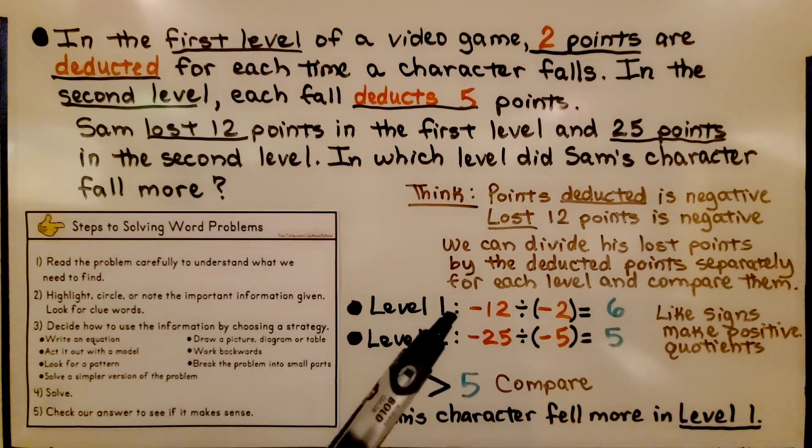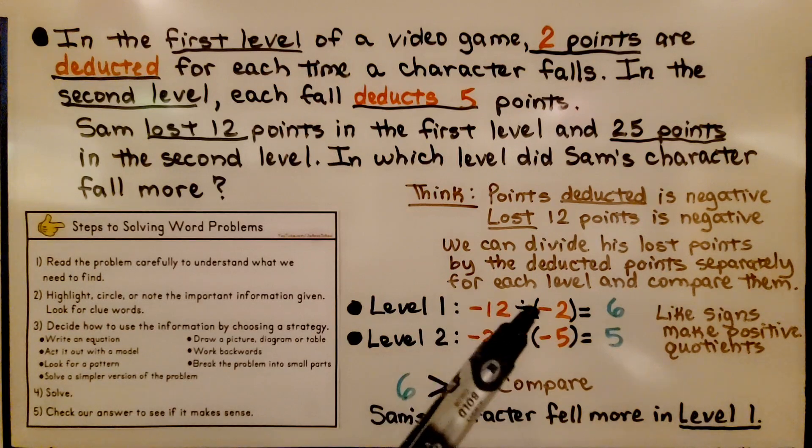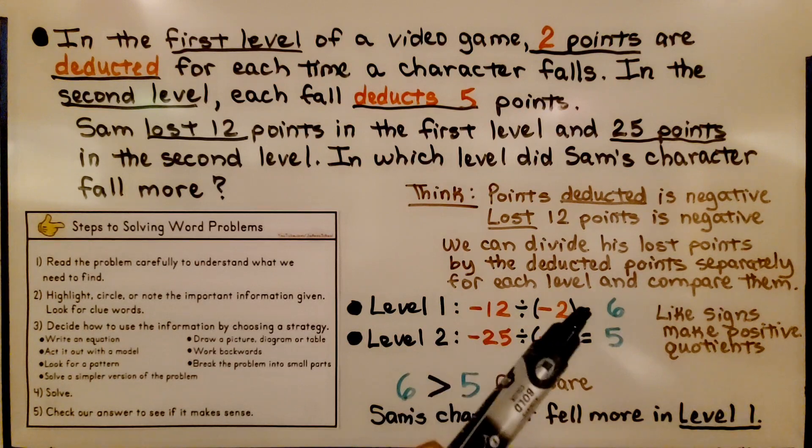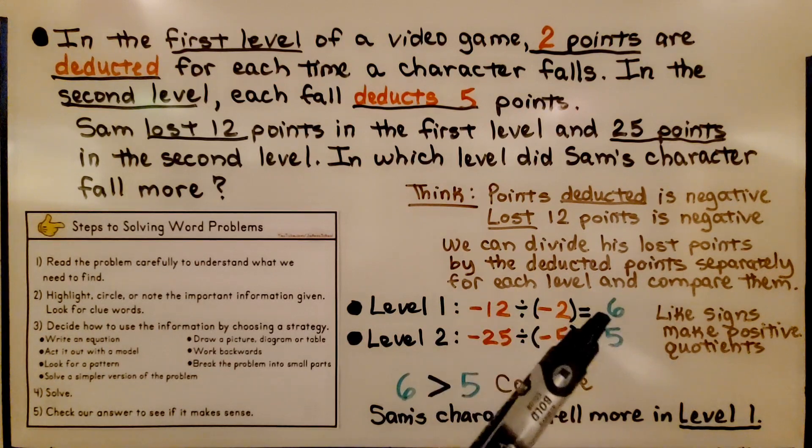For level 1, we have negative 12 divided by negative 2. We have like signs. They make a positive quotient. So, 12 divided by 2 is 6. It's a positive 6.